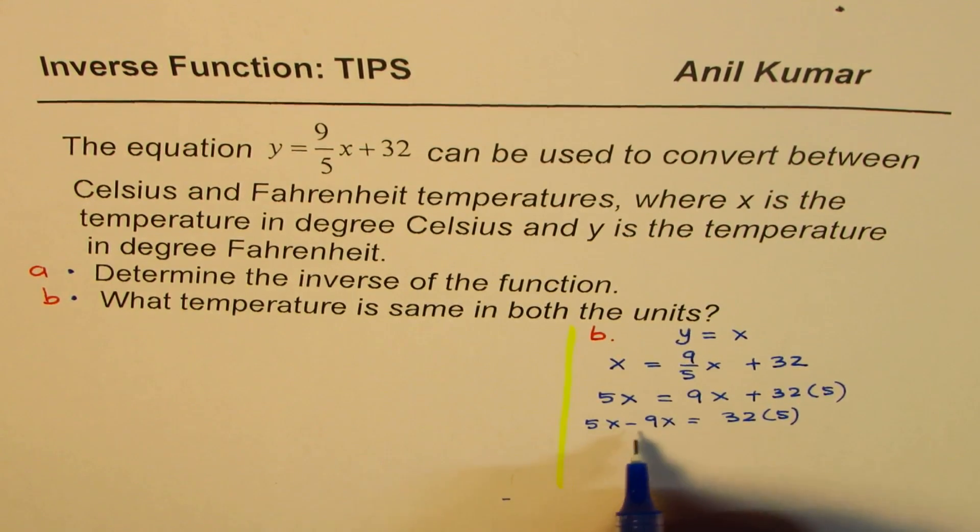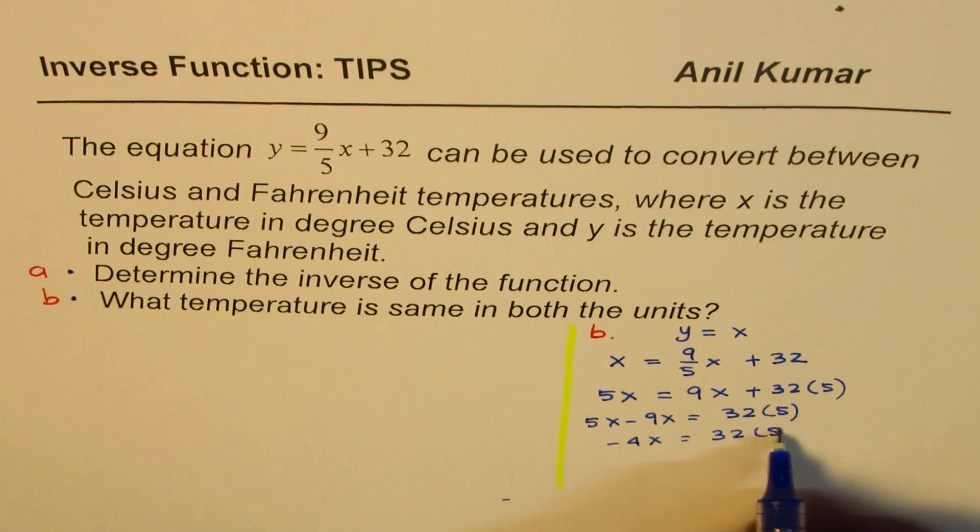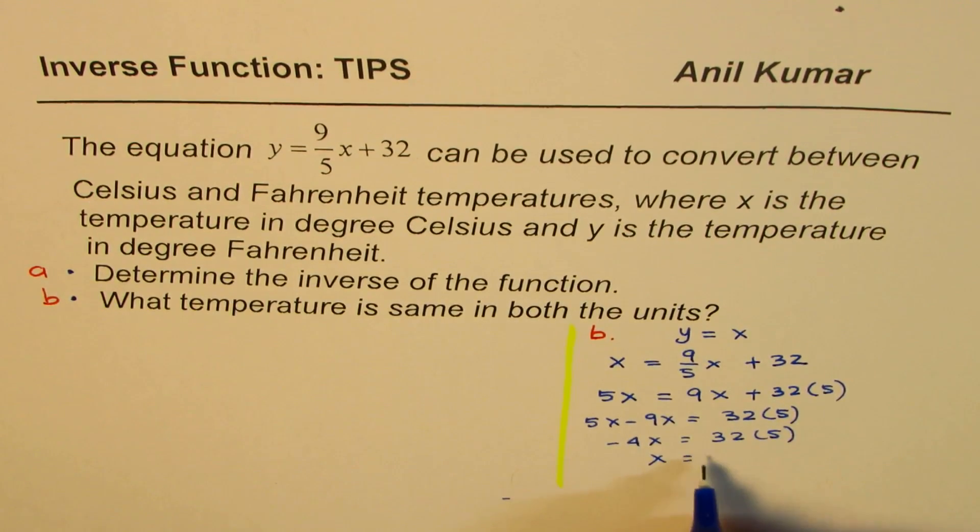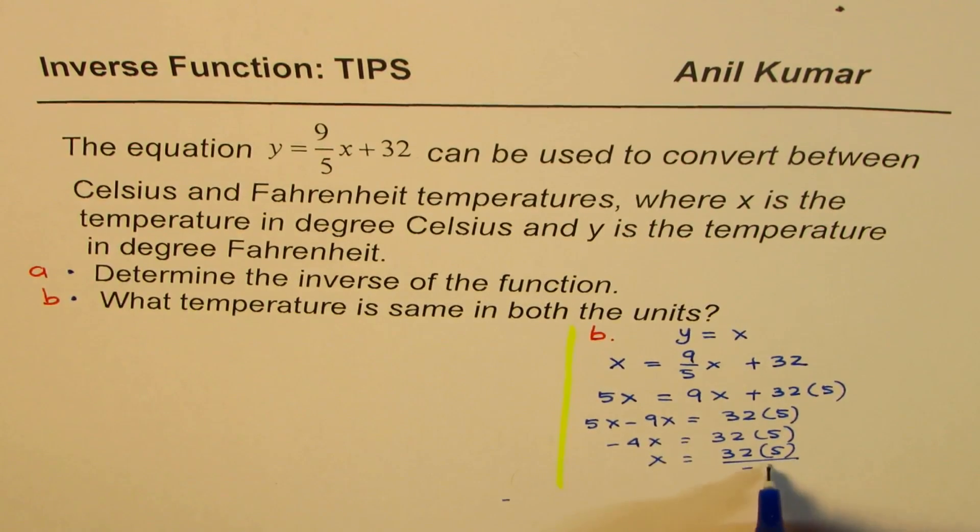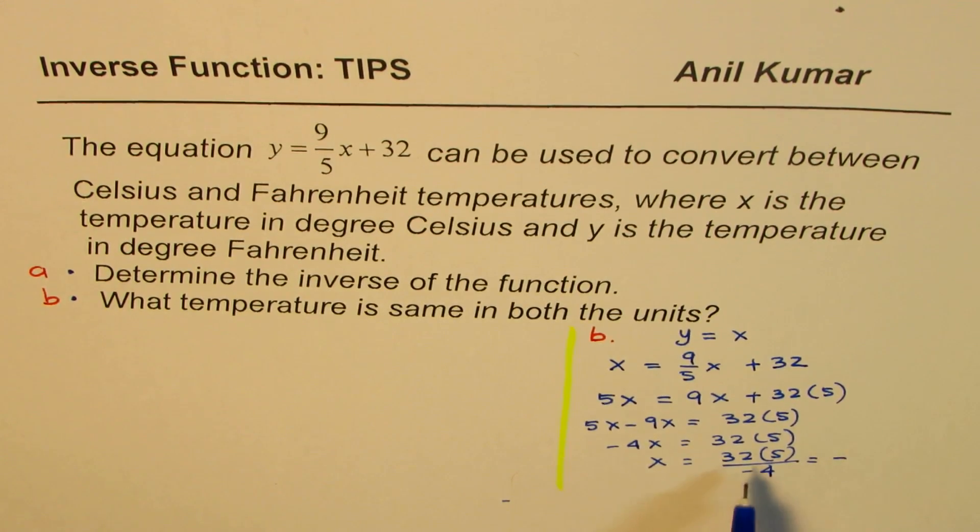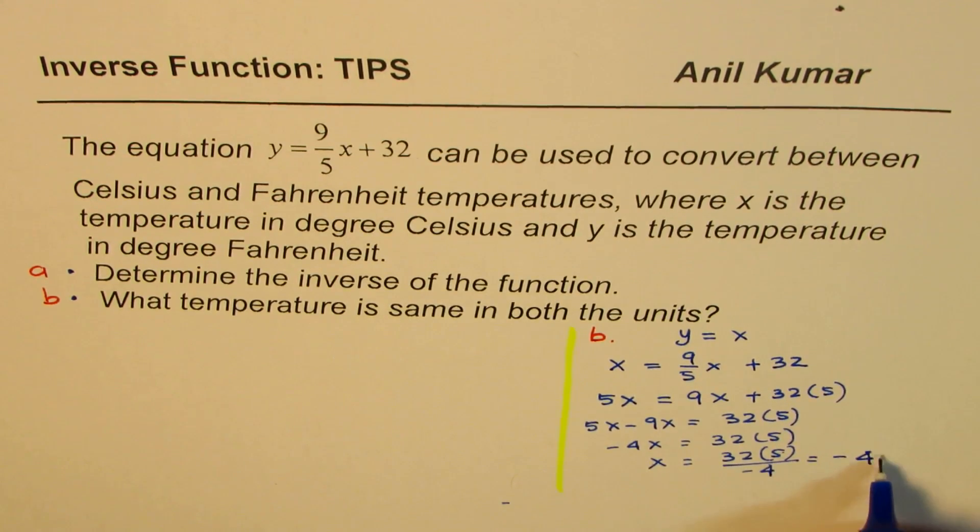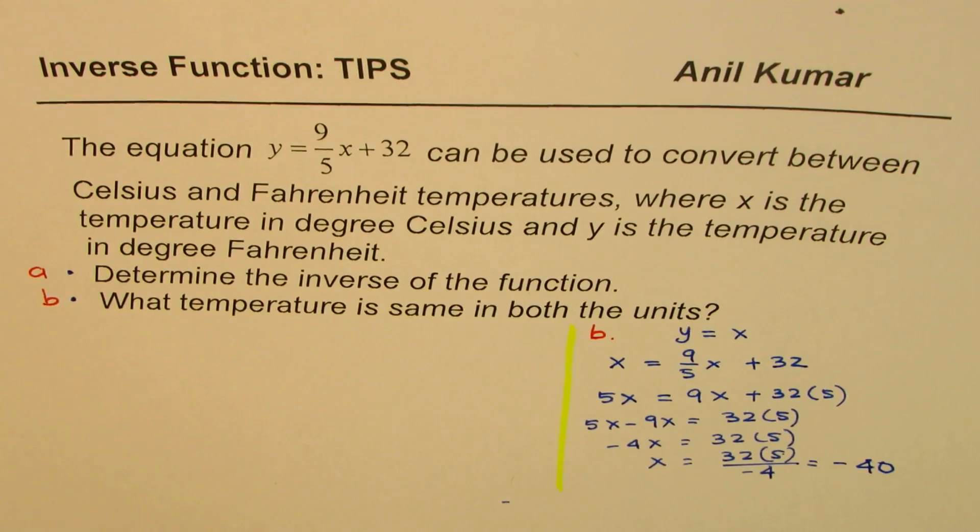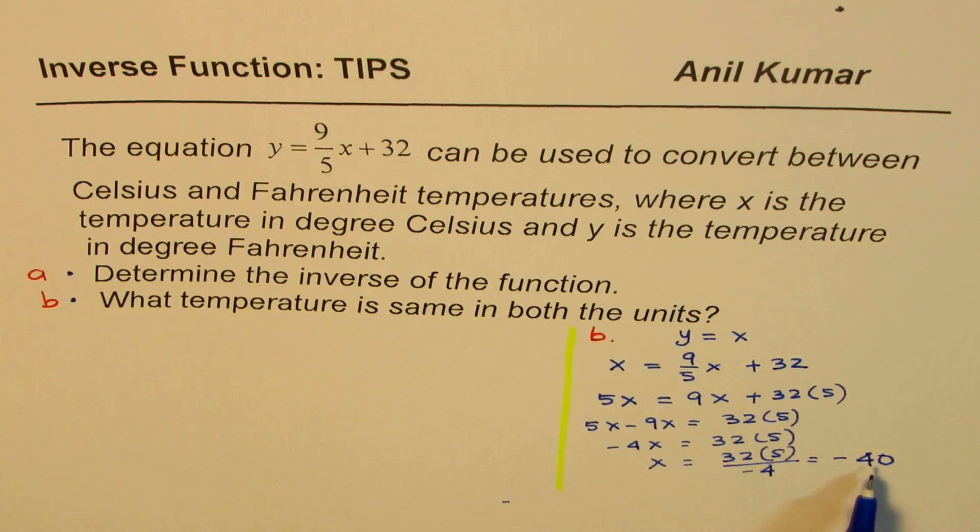So we have 5x minus 9x equals to 32 times 5. This is 4, right? Minus 4x equals to 32 times 5 and x is equals to 32 times 5 divided by minus 4. Minus 4 will result into minus 32 divided by 4 is 8. 8 times 5 is 40. That is what you get.